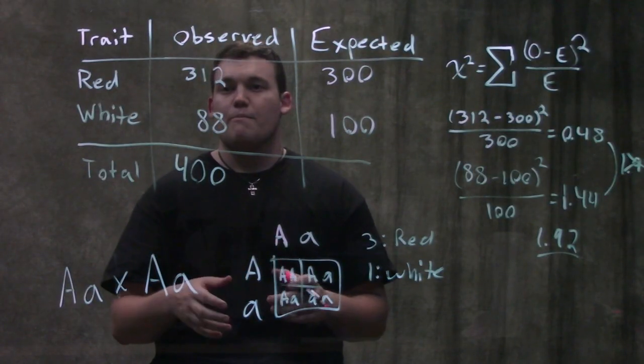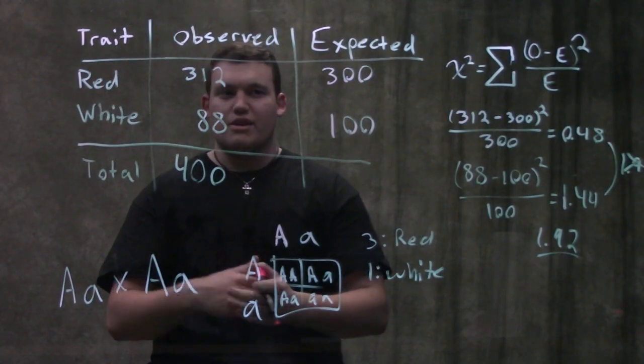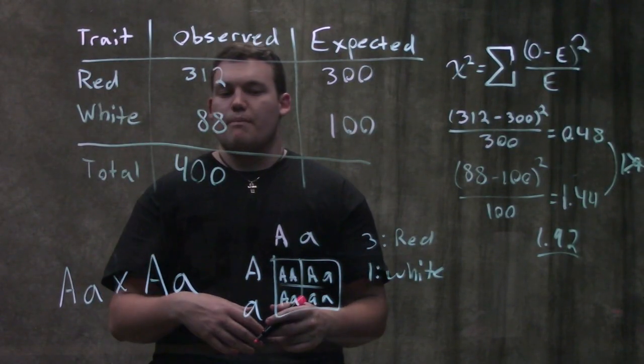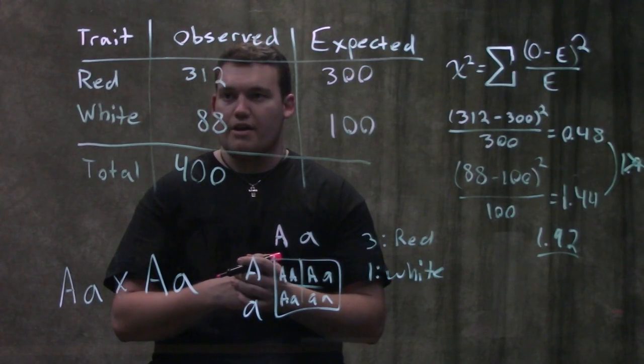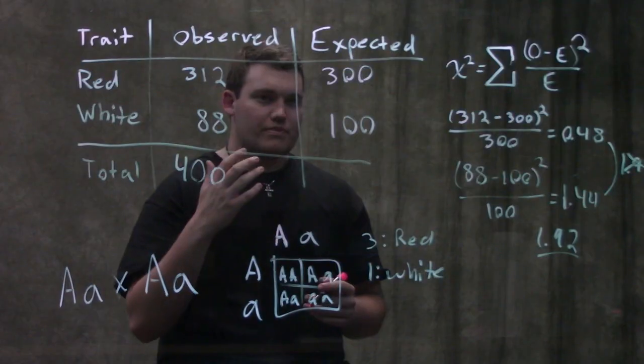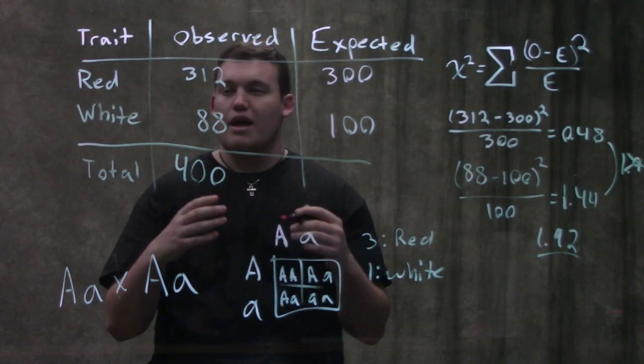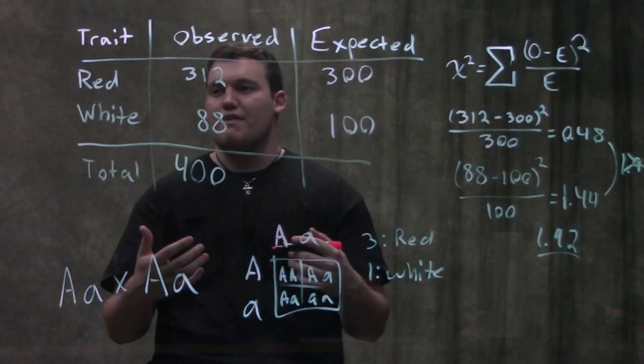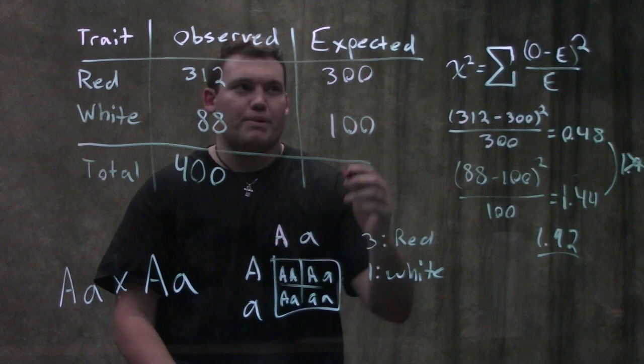all that p-value basically says is what's the chance that we're right? Because that's what we're trying to figure out. Is there a reasonable chance that this is not an autosomal dominant inheritance pattern? So the smaller our p-value is, so a lot of times they say we're gonna set our p-value for most research stuff at 0.05.